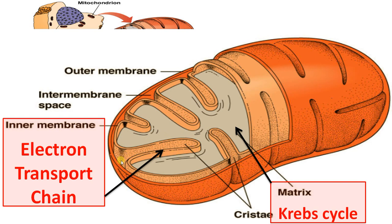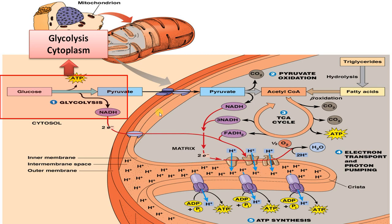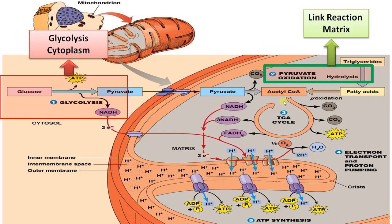After glycolysis, pyruvate is transported to the mitochondria. There, a link reaction occurs where pyruvate is converted to acetyl coenzyme A. The site of this link reaction is the matrix of the mitochondria. The acetyl coenzyme A then enters the Krebs cycle.